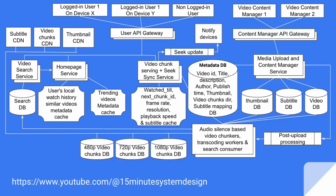Now let's talk about what happens when a user comes to the homepage. The idea is to show trending videos, and also the user's watch history. The homepage service can maintain platform-level trending videos in cache and device-specific videos of interest based on watch history on the device. In order to populate similar videos based on watch history, the last video title or description could be fed into the video search service to figure out related items. That is how the homepage service populates watch history related videos in the cache.